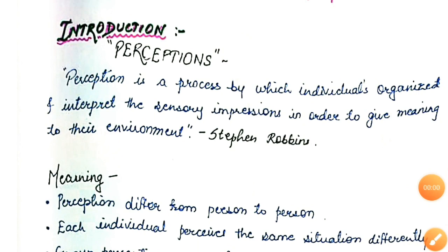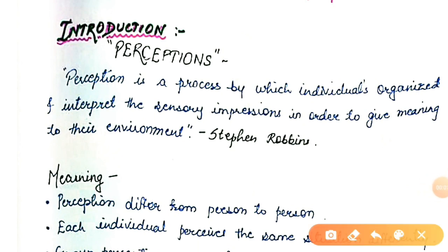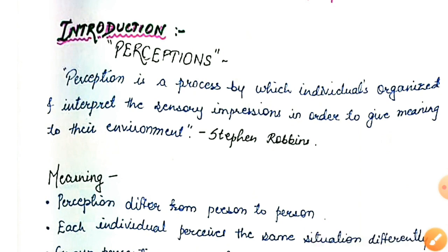Basically, what the definition is saying is: perception is something when there is an organism and some sort of stimuli is provided to that organism, and then how that organism is reacting to the stimuli is known as perception. This is the simplest definition of perception.